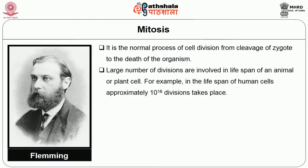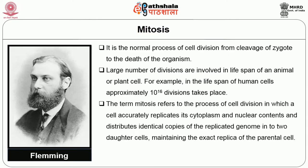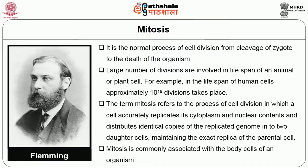A large number of divisions are involved in the lifespan of an animal or plant. For example, in the lifespan of human cells, approximately 10 to the power of 16 divisions takes place. Mitosis refers to the process of cell division in which a cell accurately replicates its cytoplasm and nuclear contents and distributes identical copies of the replicated genome into two daughter cells, maintaining the exact replica of the parent cell. Mitosis is commonly associated with the somatic cells of the organism.